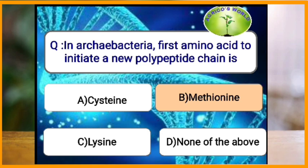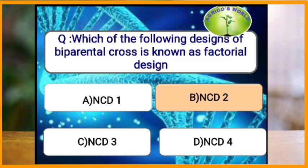In prokaryotes the first amino acid is N-formyl methionine, and in eukaryotes and Archaea it is methionine. Which of the following designs of biparental cross is known as factorial design? NCD2 is known as factorial design.